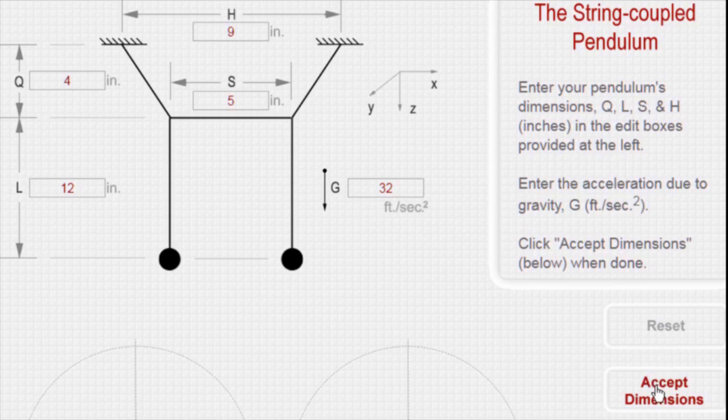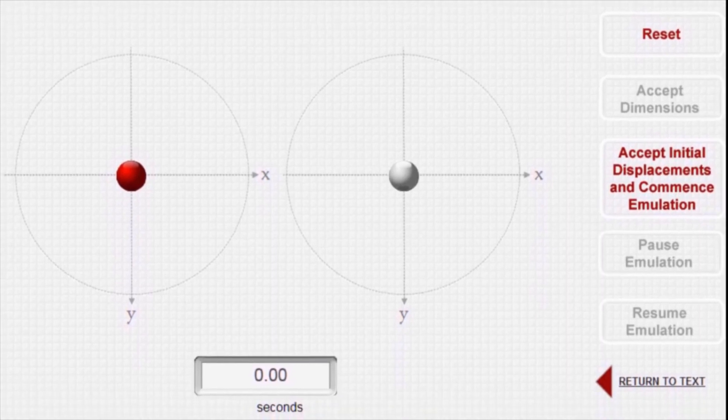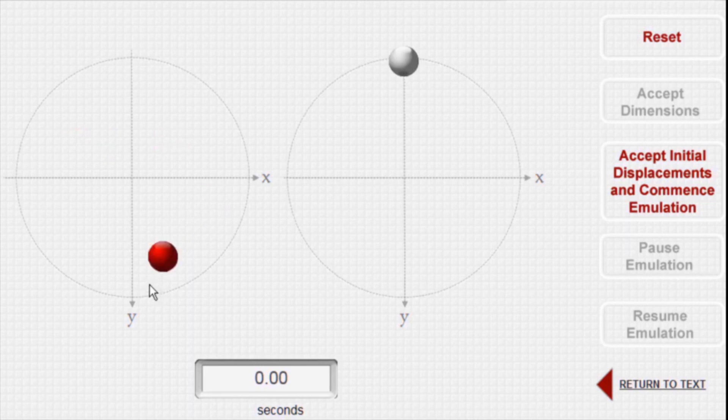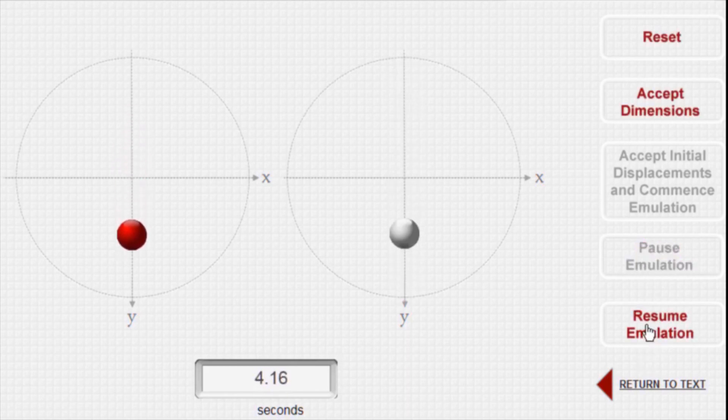When your pendulum's dimensions are established, you can move on to select the initial displacements that will initiate the pendulum's motion. This is done by clicking anywhere in either or both of the bounding circles representing the horizontal plane in which the pendulum weights are allowed to move. When you are satisfied with the initial state of your model, you can begin to emulate its subsequent motion by clicking on the Commence button. You can pause and resume the emulator whenever you wish, and you can always reset the model when you want to enter a new set of parameters or investigate some other set of initial conditions.